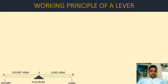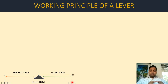Looking at the working principle of a lever: the fulcrum is the joint point. At point A we apply our effort, and at point B we have the load. The distance from the fulcrum to the load is known as the load arm, and the distance from the effort to the fulcrum is known as the effort arm.